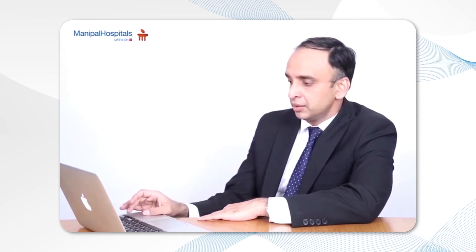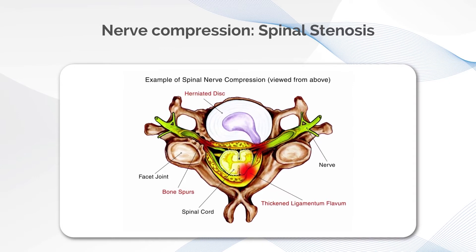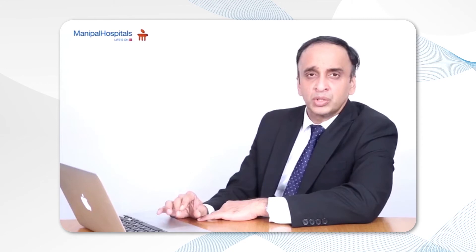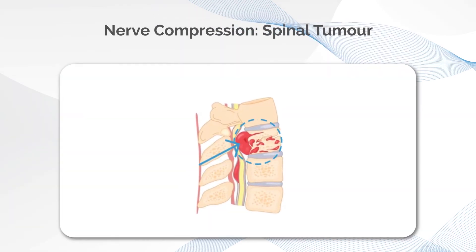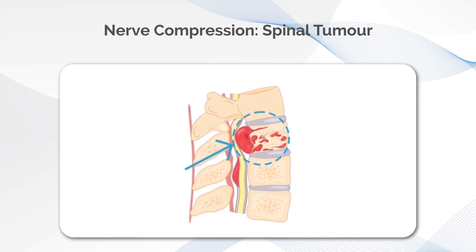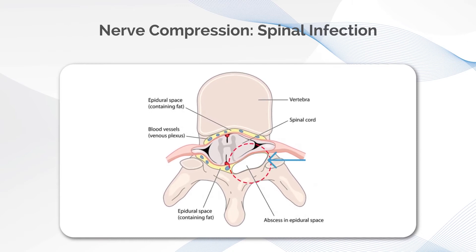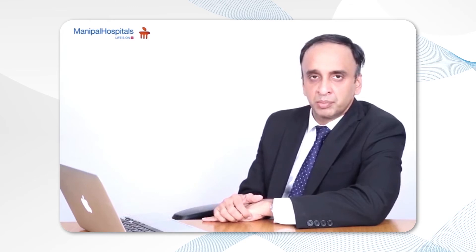There are many other causes for sciatica. Spinal canal stenosis is compression of all the nerves in the spine due to an aging process where the space for the spinal nerves is reduced 360 degrees all around — not just one slipped disc but also worn-out joints and thickened ligaments. It can also be because of spinal tumors forming in the bone or within the nerves of the spine, or spinal infection where pus compresses the nerves, all leading to pain shooting down the leg.